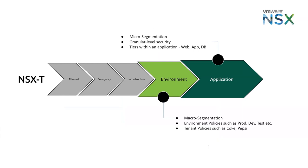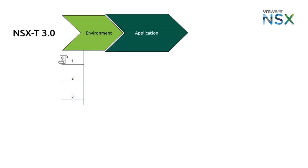The difference between the environment and application categories is likewise the difference between macro segmentation and micro segmentation. In the environment section, we are isolating between broad zones or departments. In the application section, we isolate at a much deeper level between applications or within the application itself. Macro segmentation is a great way to get started when implementing policy in NSX-T. True micro segmentation can take time to build, implement, and develop sustainable processes to support long term. But with the macro approach, you can forge a virtual distributed security policy that attains a decent level of segmentation quickly.